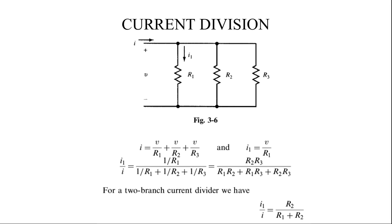Similarly, we have the current division formula from the parallel circuit. In a parallel circuit, I = V/R1 + V/R2 + V/R3, because I = I1 + I2 + I3. If you want the individual current through R1, divide I1 by I: I1/I = (1/R1) / (1/R1 + 1/R2 + 1/R3); the V cancels. Simplifying gives I1/I = R2R3 / (R1R2 + R1R3 + R2R3), so I1 = I × R2R3 / (R1R2 + R1R3 + R2R3).